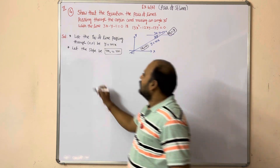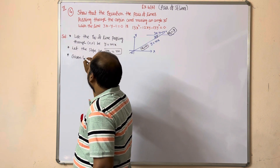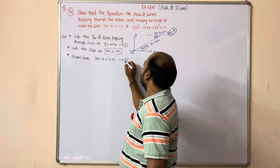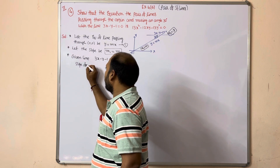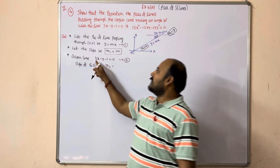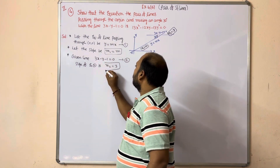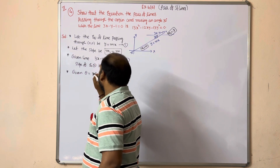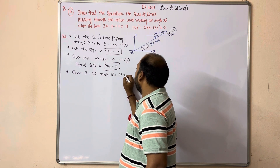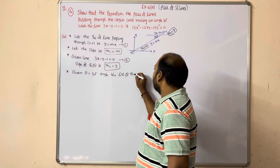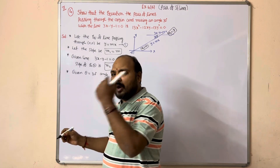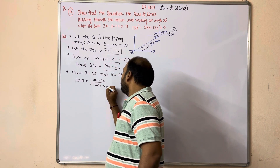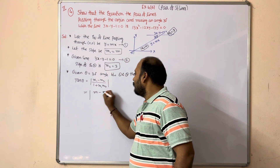The angle between them is 30 degrees. The given line is 3x minus y minus 1 equal to 0 - this is equation one. This is equation two, and the slope of equation two is m2 equal to minus 3 by minus 1. Given that the angle between these two lines is 30 degrees, theta equal to 30 degrees. Applying the tan theta formula: tan theta equal to mod of (m1 minus m2) by (1 plus m1 m2). Substituting, m1 is m and m2 is 3.